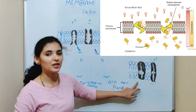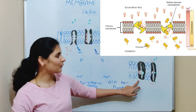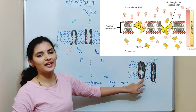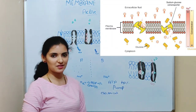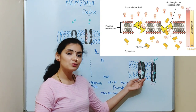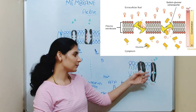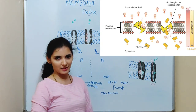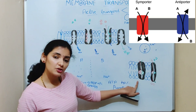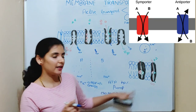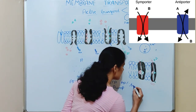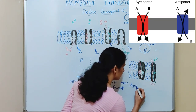The movement of sodium is coupled with the movement of glucose against its concentration gradient. The energy for glucose movement comes from the sodium gradient. If the molecules to be transported move in the same direction, it is called a symporter.